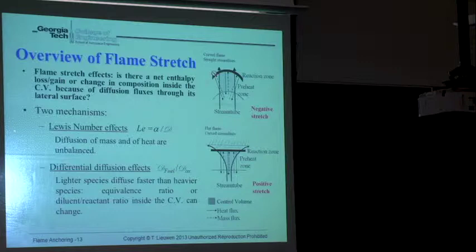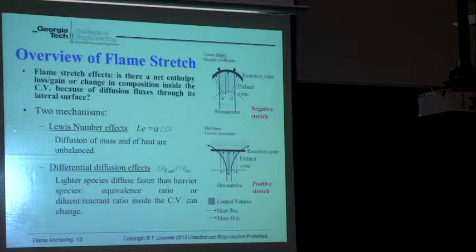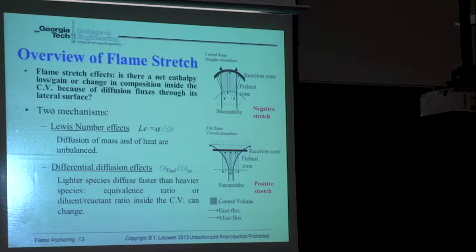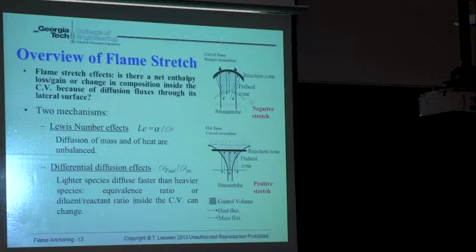They won't diffuse at the same rate — hydrogen diffuses faster — so you lose more hydrogen than air, and the hydrogen-to-oxygen ratio drops as you move along the streamline. The equivalence ratio of the macro mixture drops for this configuration. The opposite happens with propane, which is heavier than air with molecular weight 44 — you lose less propane than oxygen, so the mixture actually becomes richer.